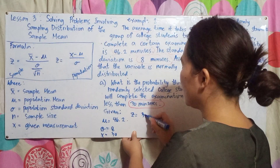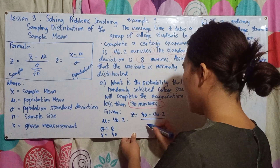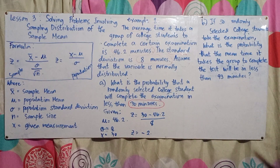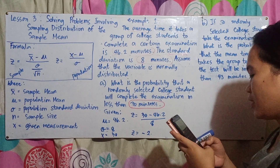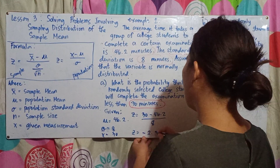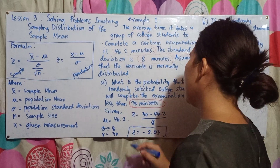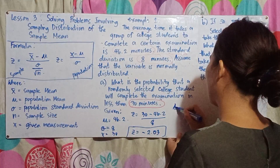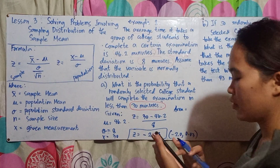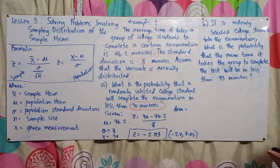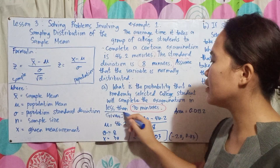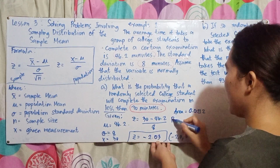Z equals 30 minus 46.2 divided by standard deviation of 8. So 30 minus 46.2 equals negative 16.2, divided by 8. The answer is Z equals negative 2.03. The area can be found at negative 2.0 and 0.03 in the Z-table. So the area is 0.0212. Since the given is 'less than', the area equals the probability directly, which is 0.0212.